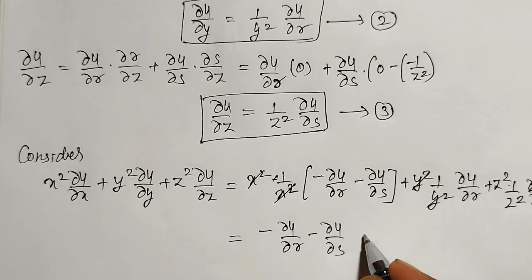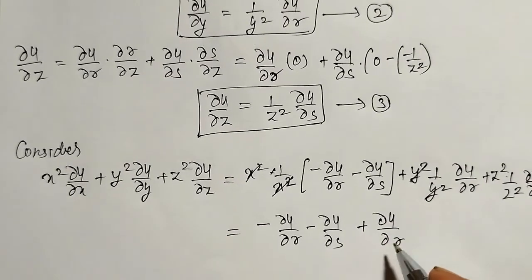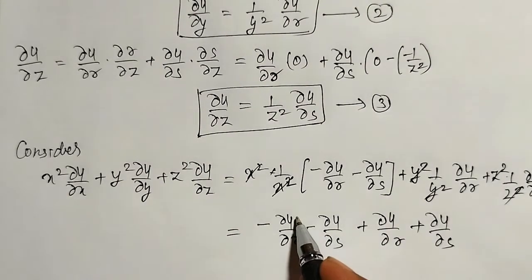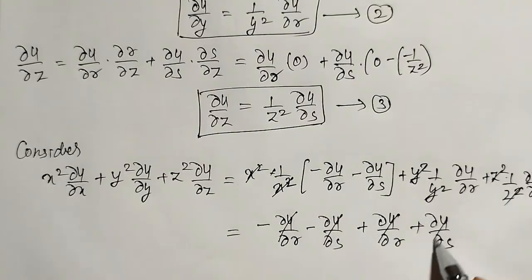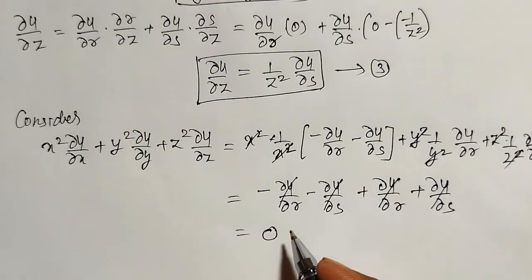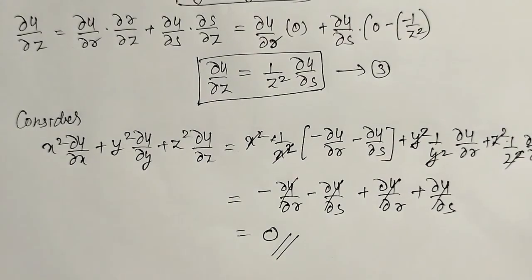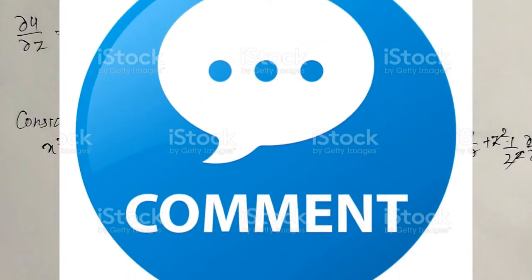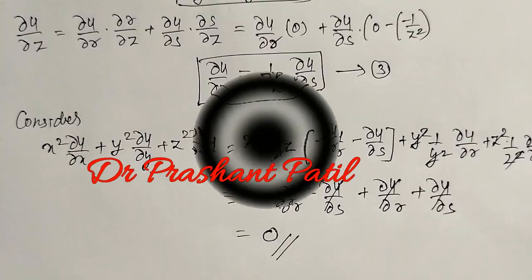Minus ∂u/∂r and plus ∂u/∂r cancel; minus ∂u/∂s and plus ∂u/∂s cancel, which equals 0 — the required answer. Like this we can use composite functions to find out partial derivatives. Some more examples I am going to solve in my next videos. If you haven't subscribed my channel, please subscribe and don't forget to hit the bell icon so that you get notifications of my next videos. Like, comment, and share this video. Thank you friends.